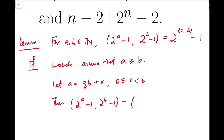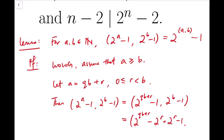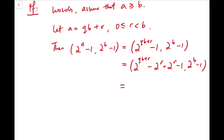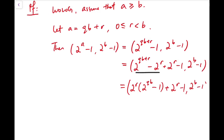Then I can rewrite the GCD by rewriting 2 to the a minus 1. This expression can be rearranged so that the first two terms share a common factor of 2 to the r, and what remains inside the bracket is 2 to the qb minus 1 plus 2 to the r minus 1. Note that 2 to the qb minus 1 is actually divisible by 2 to the b minus 1.